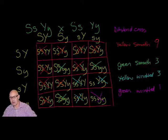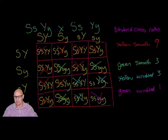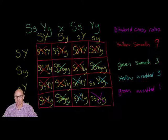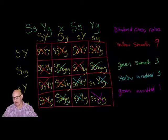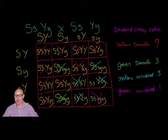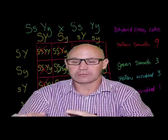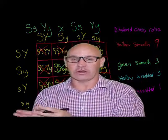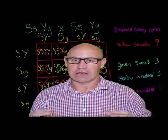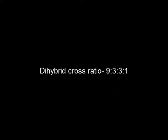This is what we call the dihybrid cross ratio — it's the ratio of phenotypes: nine, three, three, one. Nine have the dominant phenotype for both traits; three have dominant for one trait and recessive for the other; another three have the opposite combination; and one offspring has both recessive traits. That is how we do a dihybrid cross. This is the theoretical ratio, and you don't always see this in actual offspring due to other factors we'll talk about in an upcoming video.